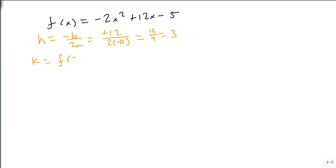Our k then is f of 3, so minus 2 times 3 squared plus 12 times 3 minus 5. 3 squared is 9 times minus 2 is minus 18. 12 times 3 is 36 minus 5, so this becomes 18 minus 5, or 13. So my vertex is at 3, 13.